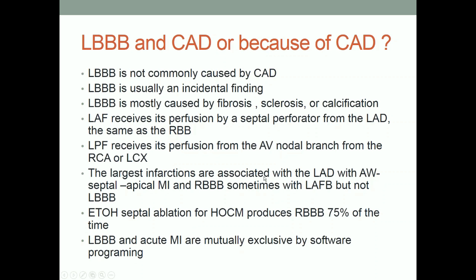You'd also need an inferior wall infarct to knock out the AV nodal branch area from the right coronary or circumflex, depending on which is dominant. So it's very hard to get a left bundle branch block from acute MI unless you have two acute MIs at one time. The largest infarctions are associated with the LAD - anterior wall, septal, and apical MIs - and are associated with right bundle branch block because the right bundle is supplied by septal perforators, sometimes with left anterior fascicular block, but not left bundle branch block. Septal ablation for hypertrophic cardiomyopathy produces right bundle branch block, never left bundle branch block - 75% of a hundred cases had right bundle branch block.